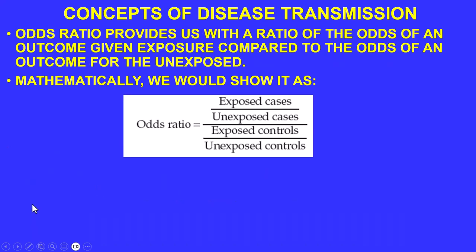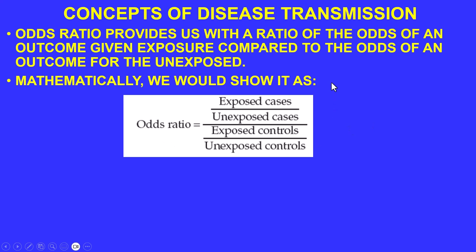The odds ratio is the ratio of the odds of an outcome given exposure compared to the odds of an outcome for the unexposed. Simply put: what are the odds that you went to the stadium and didn't get sick versus went and did get sick? You have exposed cases over unexposed cases, divided by exposed controls over unexposed controls — that's your odds ratio.